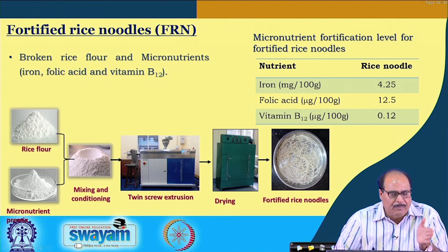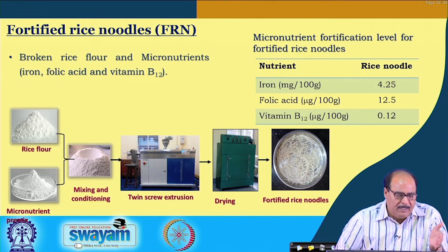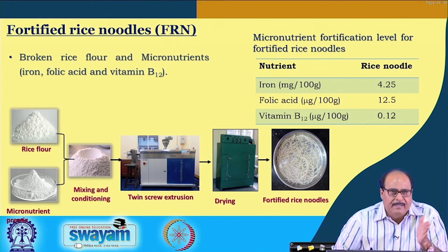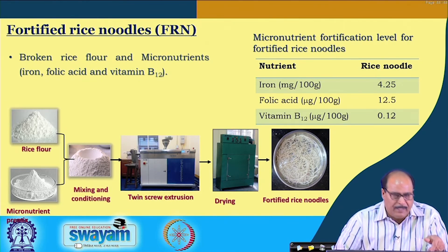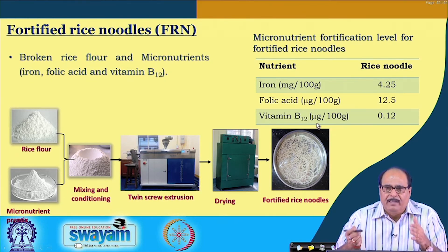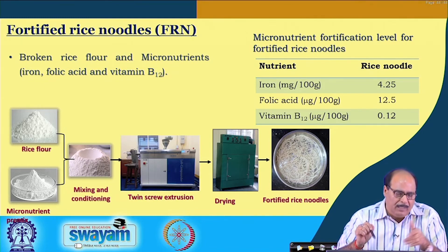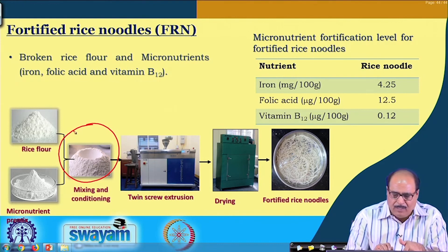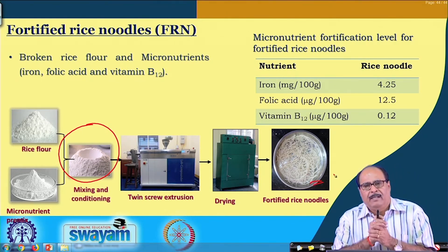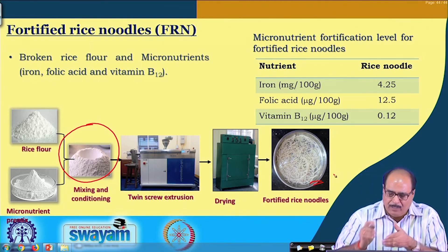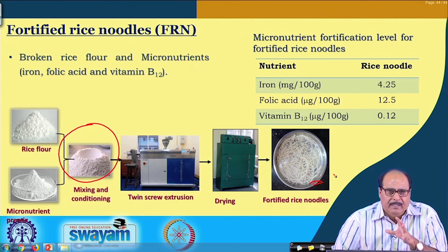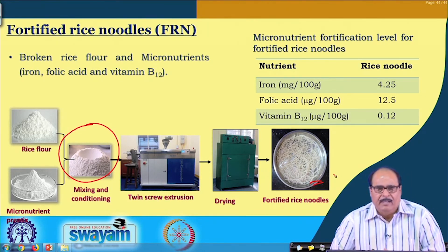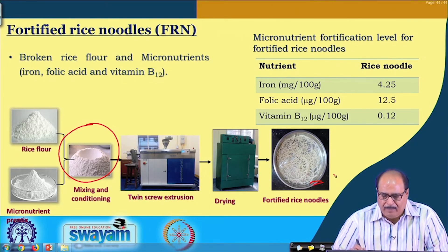Another product is fortified rice noodle. Using the same type of machine, rice flour is taken and appropriate quantities of micronutrients — iron, folic acid and vitamin B12 — are added, then mixed and conditioned. After mixing and conditioning, they are fed to the extruder where an appropriate die is provided to give the desired noodle shape. This noodle resembles commercial products in its sensory and other characteristics, making it a healthy noodle fortified with micronutrients iron, vitamin B12 and folic acid.